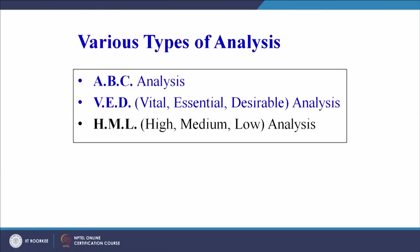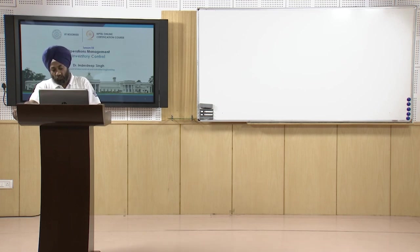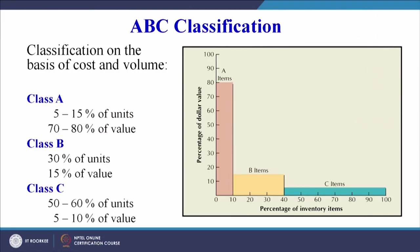Today we will take two examples of analysis: ABC analysis and VED analysis — Vital, Essential, and Desirable. There can also be HML — High, Medium, and Low analysis. The criteria can be usage, value, consumption, or frequency. We will understand ABC with a diagram and an example, and introduce the basic concept of VED analysis.